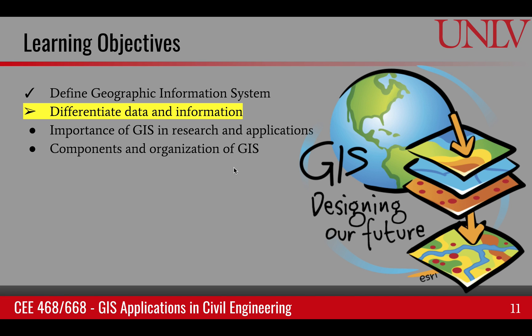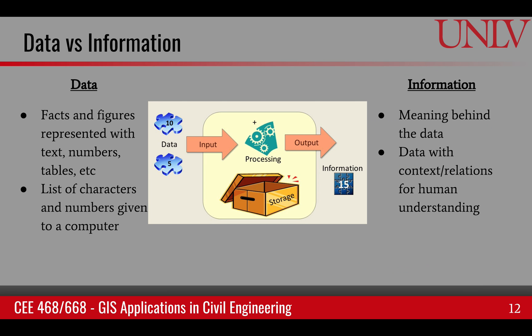The next learning objective is differentiation between data and information. Data is facts and figures represented with text, numbers, and tables. It is a list of characters or numbers that are given to a computer for processing.